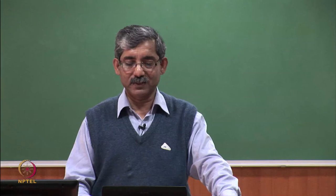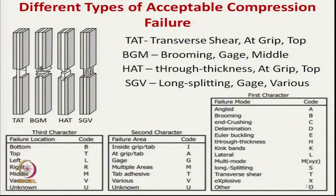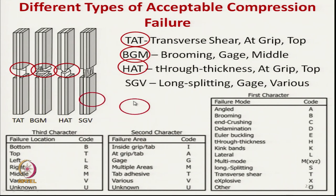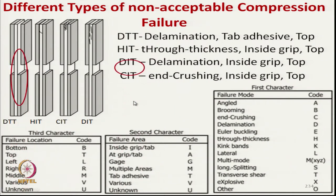HAT means H = through thickness, A = at grip, T = at top. SGV means long splitting at gauge at various points. There are many other combinations of failure codes possible. By examining the failure type, we can take decisions to adjust process parameters and change matrix characteristics.